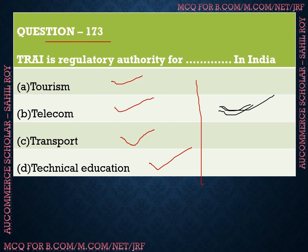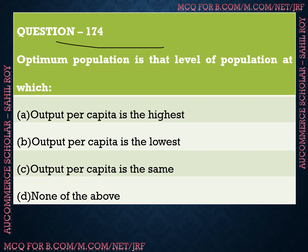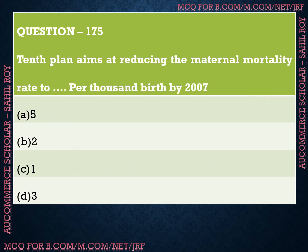Question number 174: Optimum population is that level of population at which? We have four options: Option A is output per capita is the highest, Option B is output per capita is the lowest, Option C is output per capita is the same, and Option D is none of the above. The correct answer is Option A — optimum population is that level of population at which output per capita is the highest.